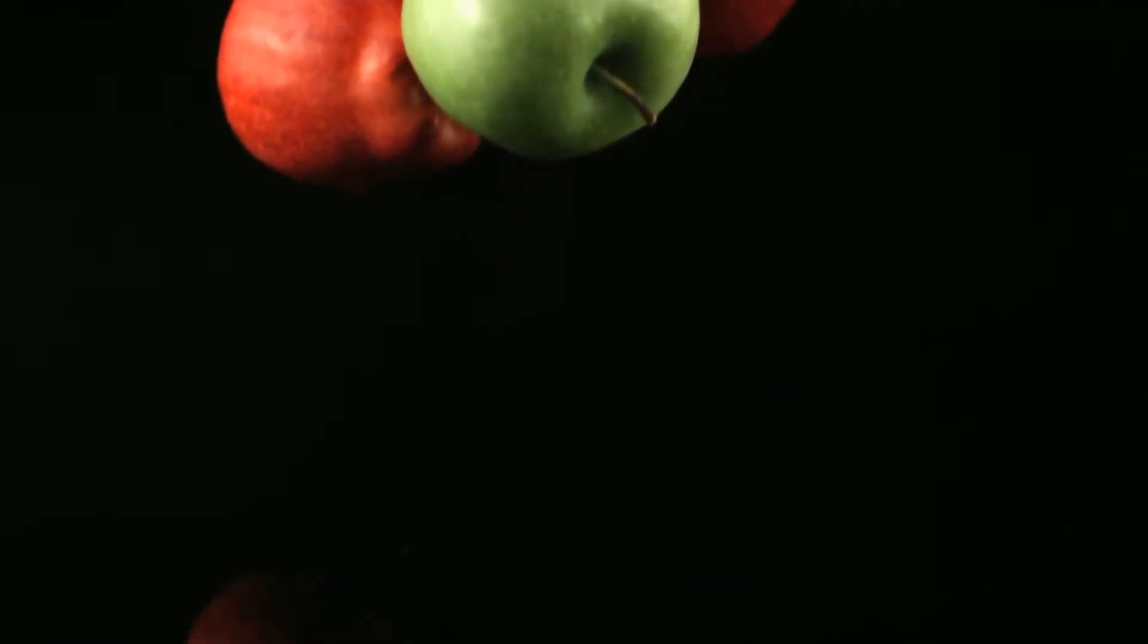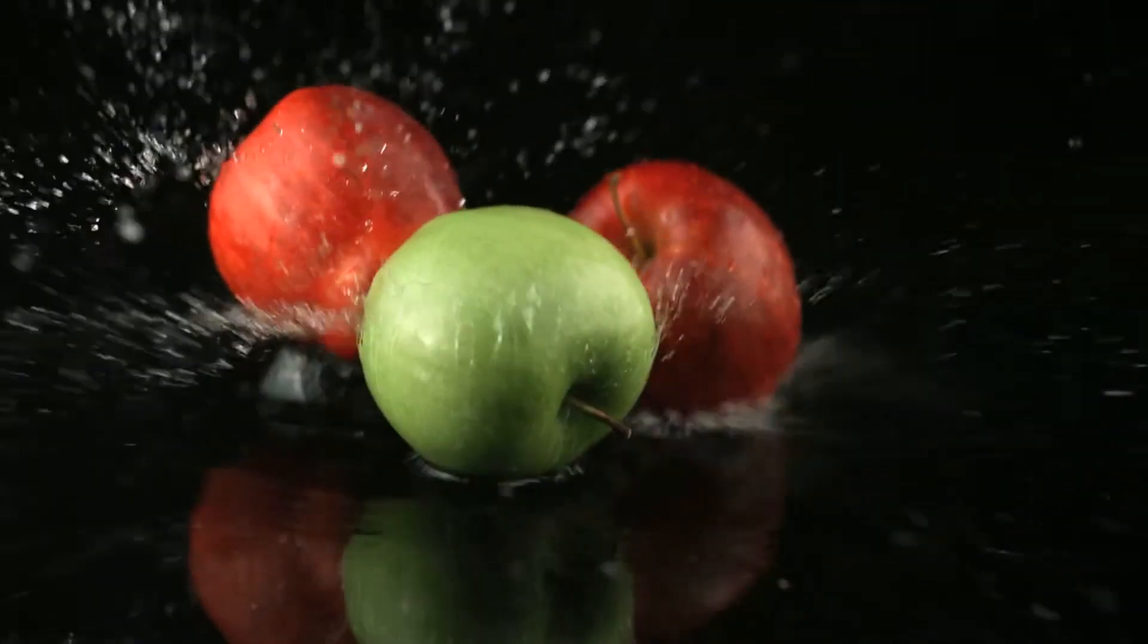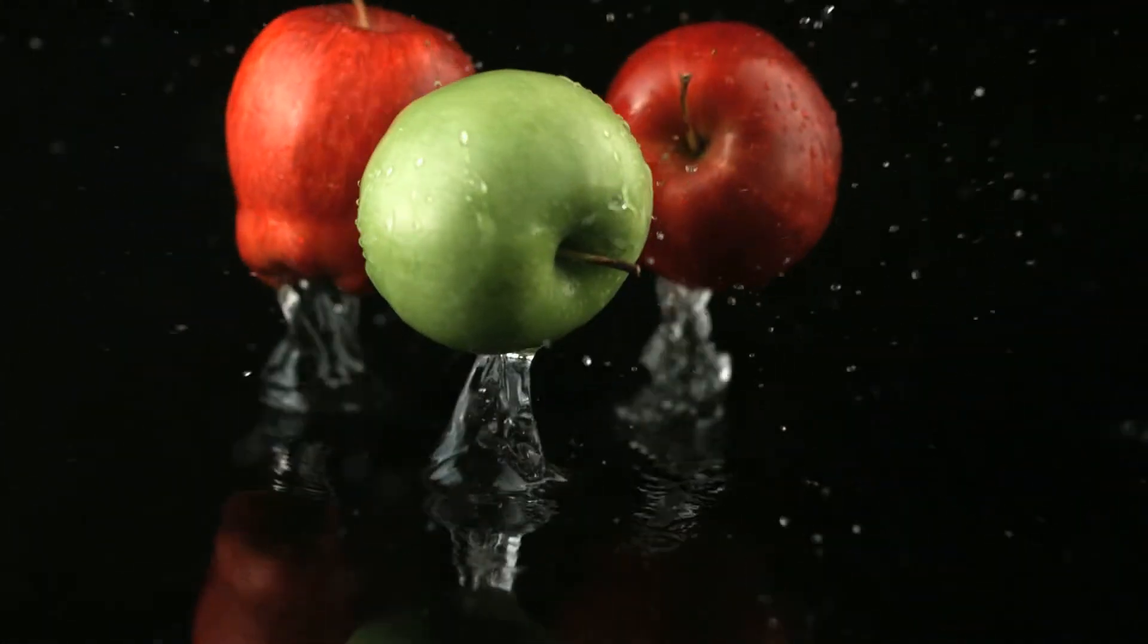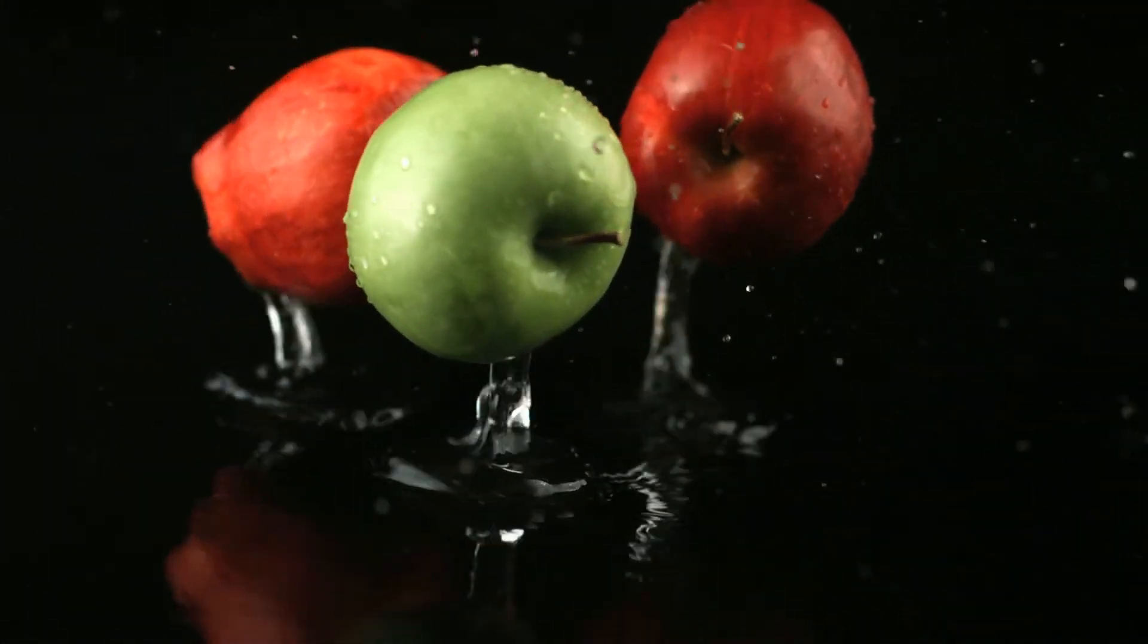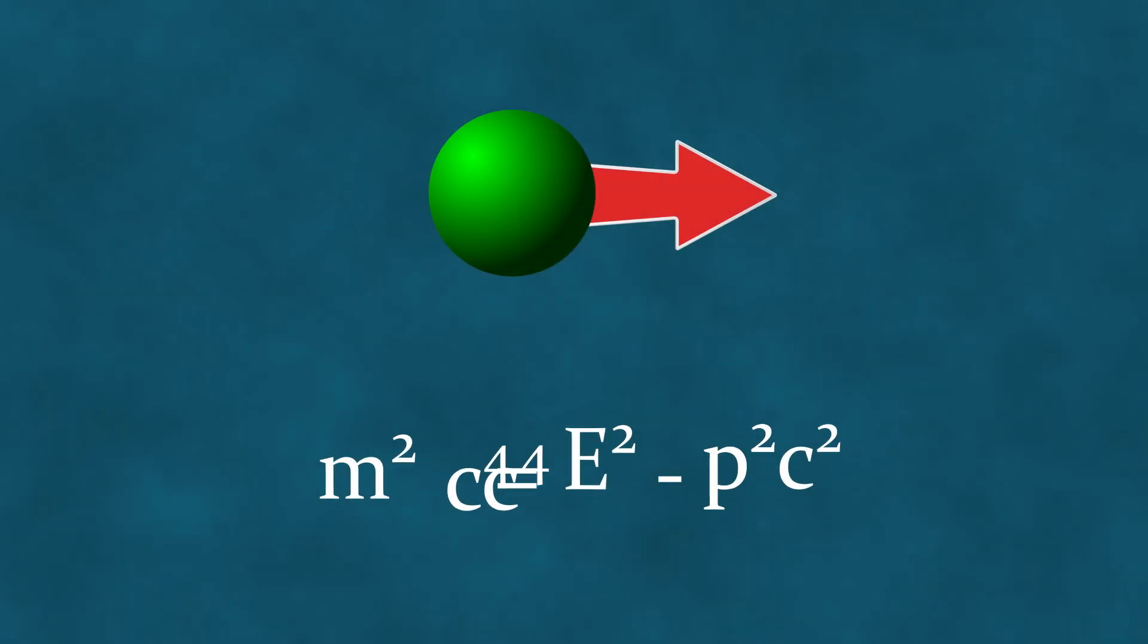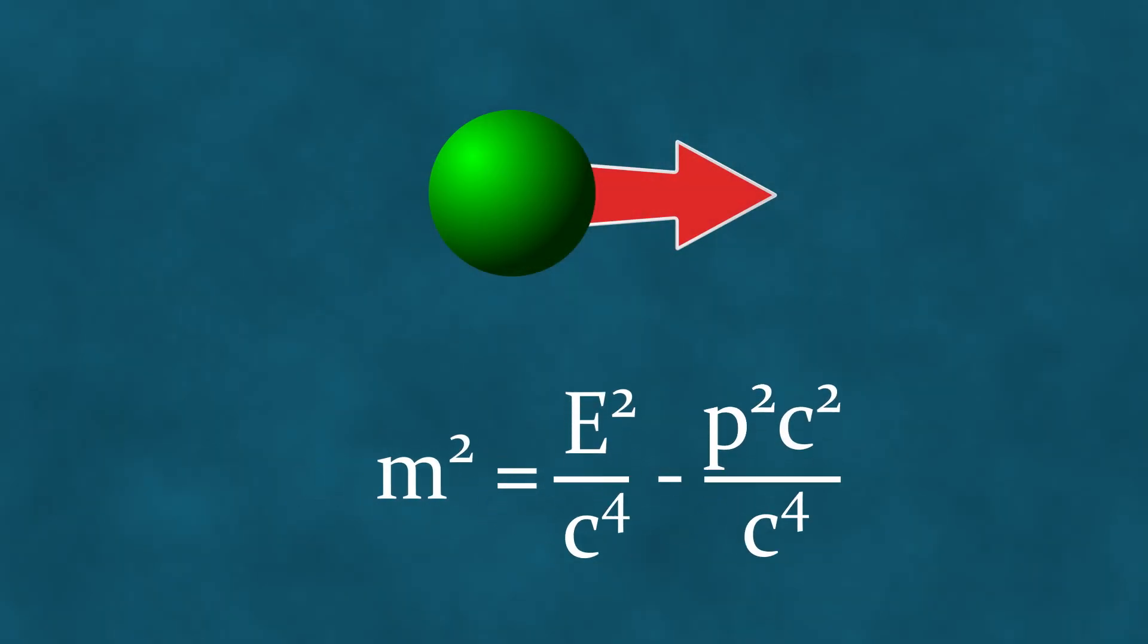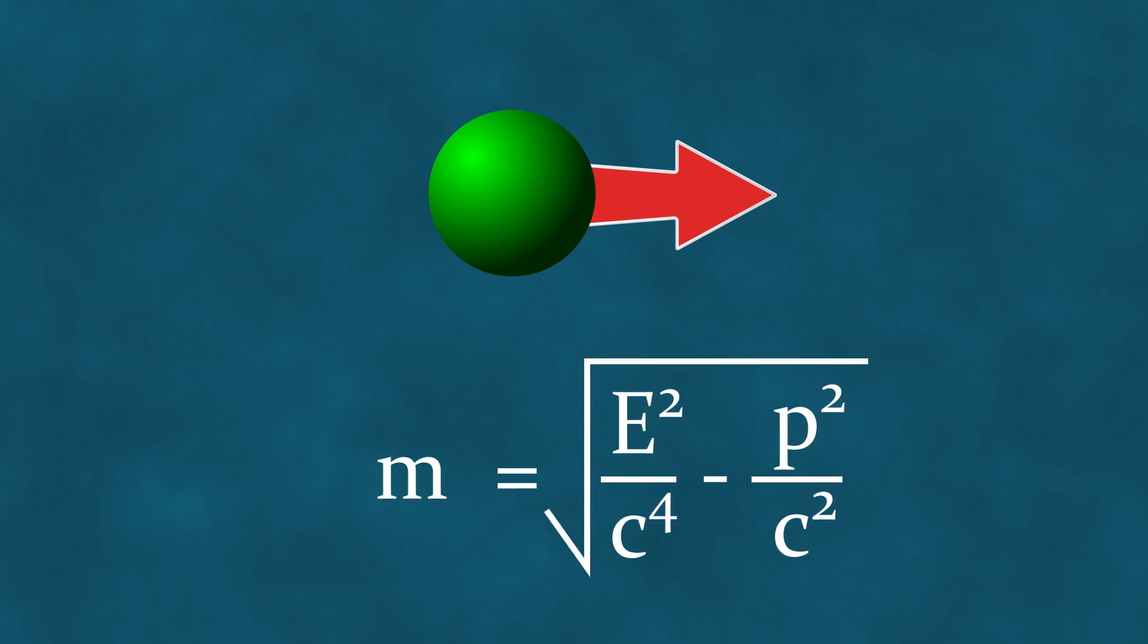That is why they are equal to each other, and not just equal, but represent the same quantity, simply viewed from different perspectives. And from this, it becomes clear that a body possessing energy also possesses mass, equal to its energy divided by the square of the speed of light, in only one specific case, when the body's momentum is zero, that is, for a stationary body. In all other cases, applying the formula E equals MC squared is simply mathematically incorrect.